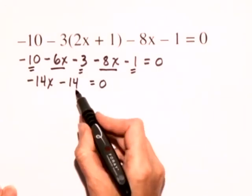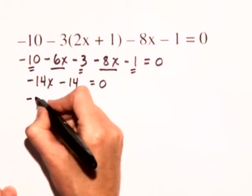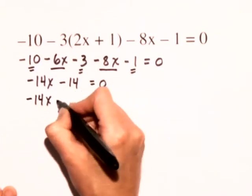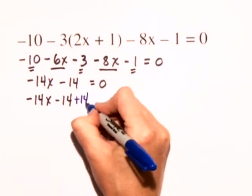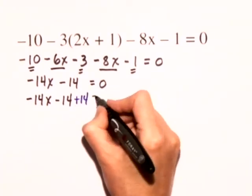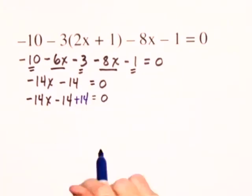So let's add 14 to both sides of this equation. We have negative 14x minus 14 plus 14 is equal to 0 plus 14.